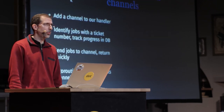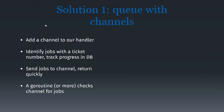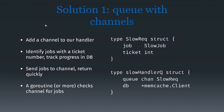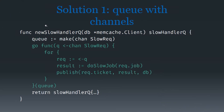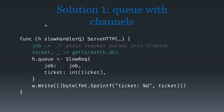My first solution is to make a queue with channels. We add a channel to the handler, identify jobs with a ticket ID, and keep track of progress in the database. We send jobs to the channel, and there's a goroutine in the background listening for new jobs. The slow request is just a job with a ticket ID for tracking. The handler has a channel of these slow requests, and we build it by instantiating the queue and making a goroutine that sits in a loop waiting for jobs, processes them, and publishes to the database.